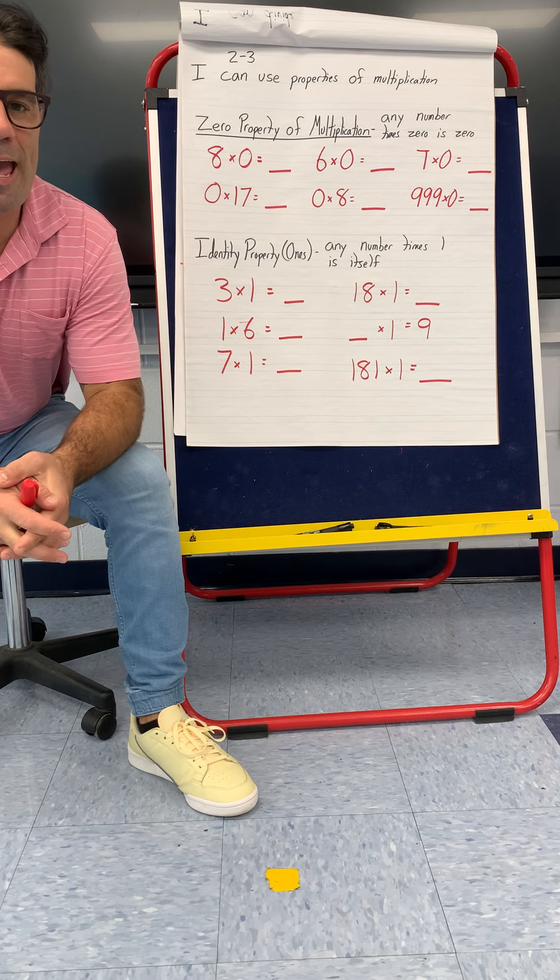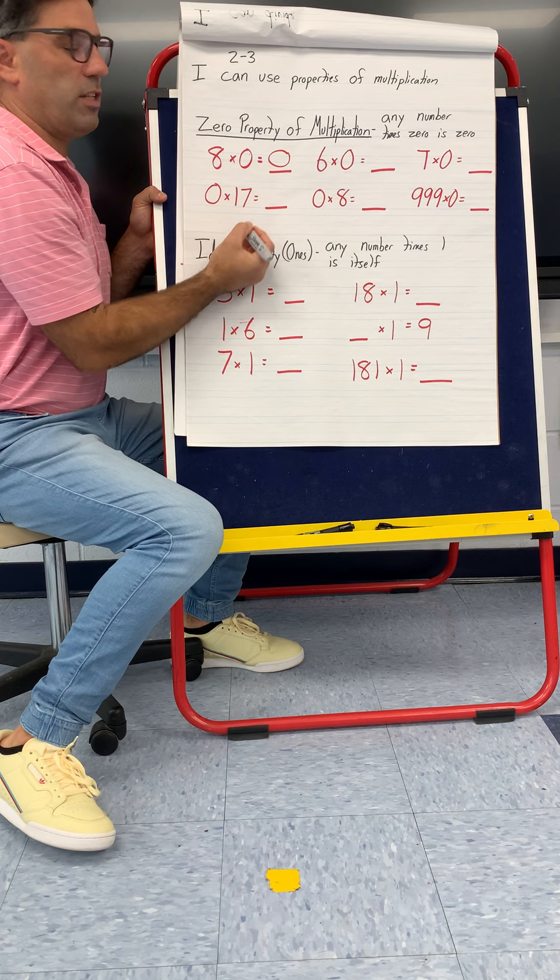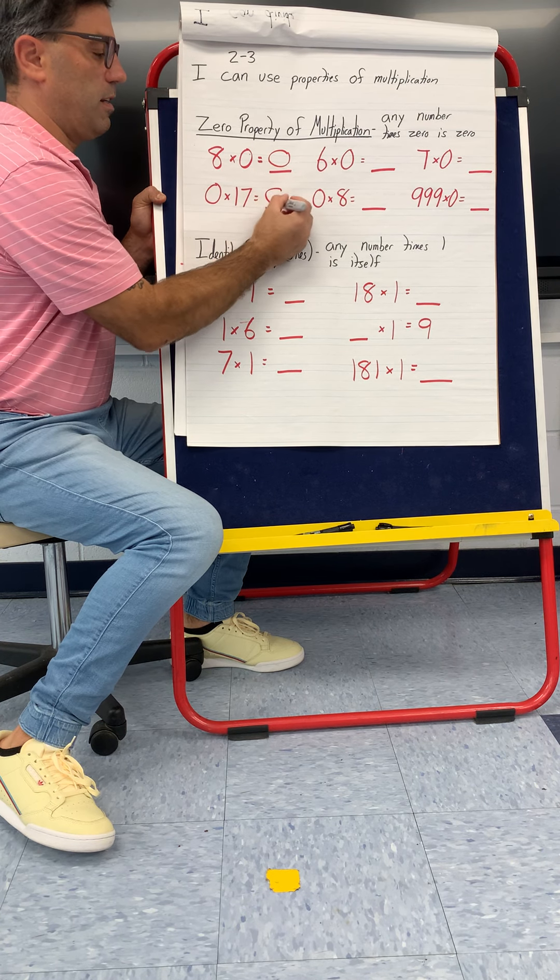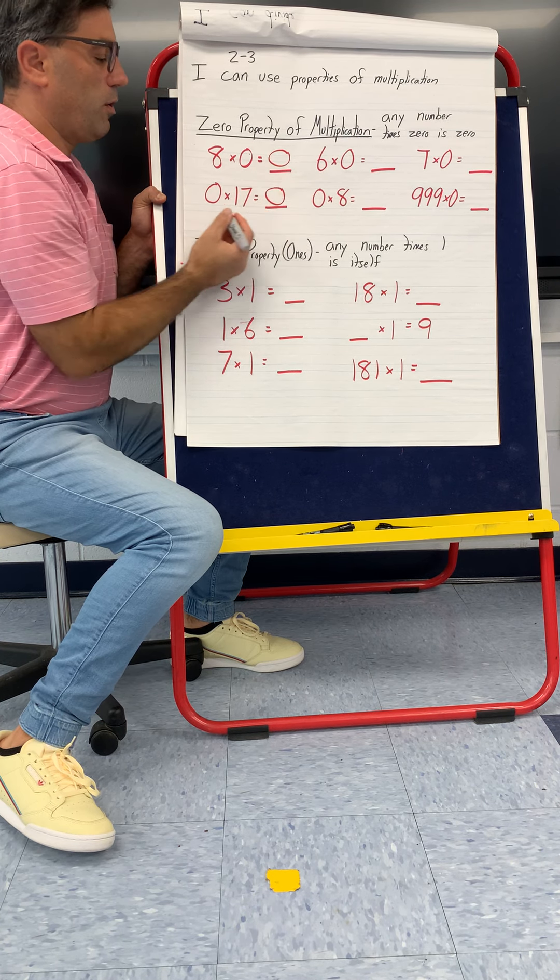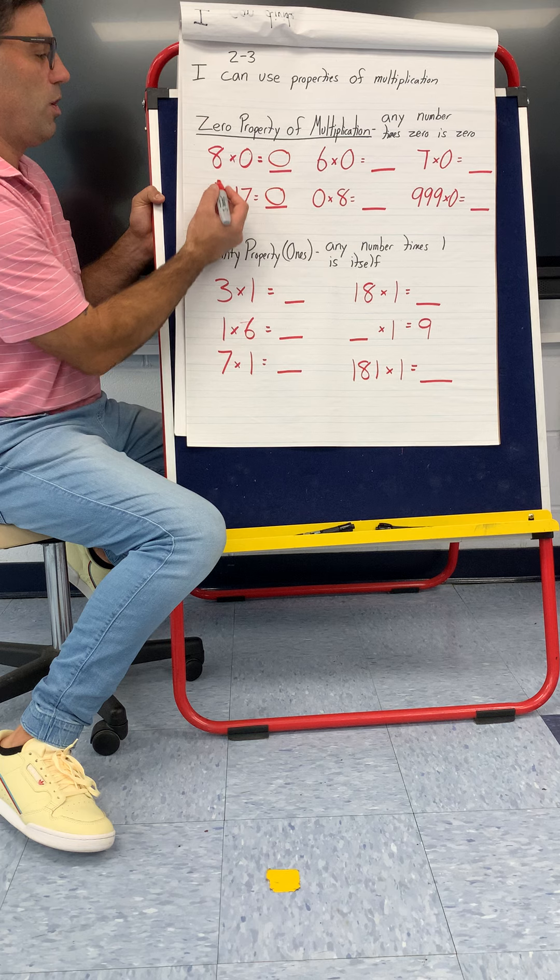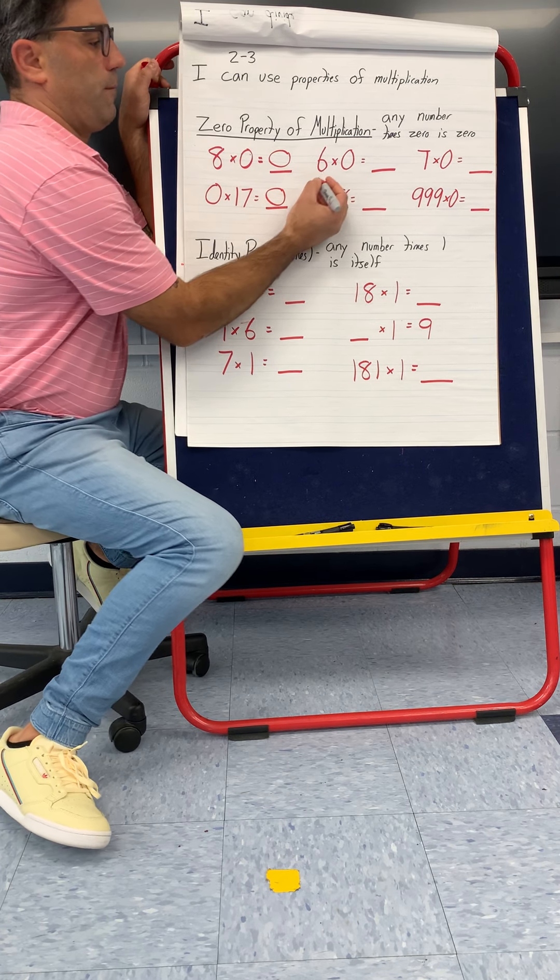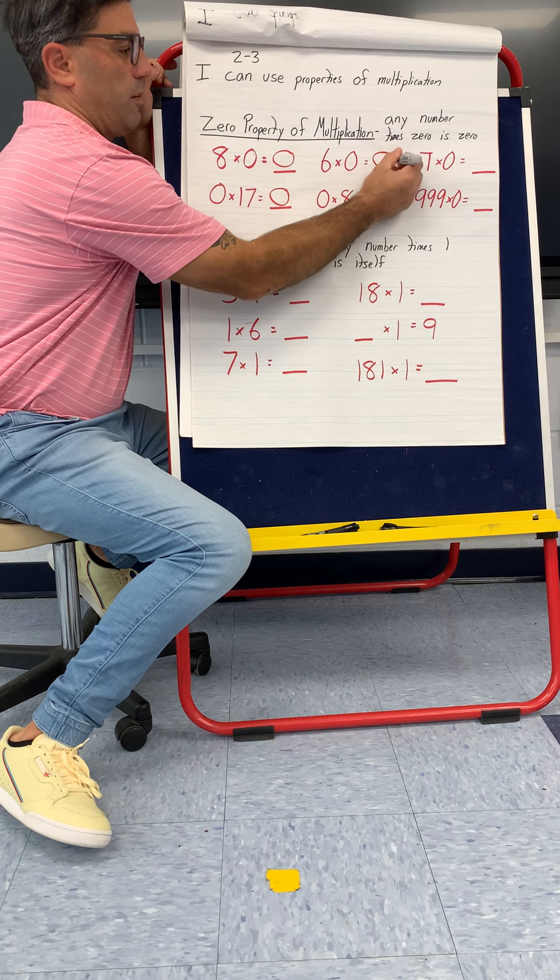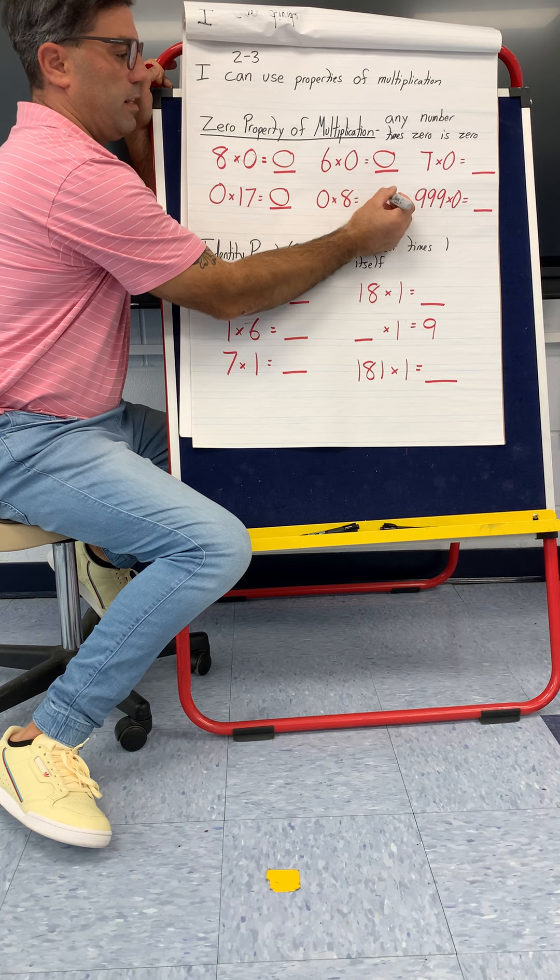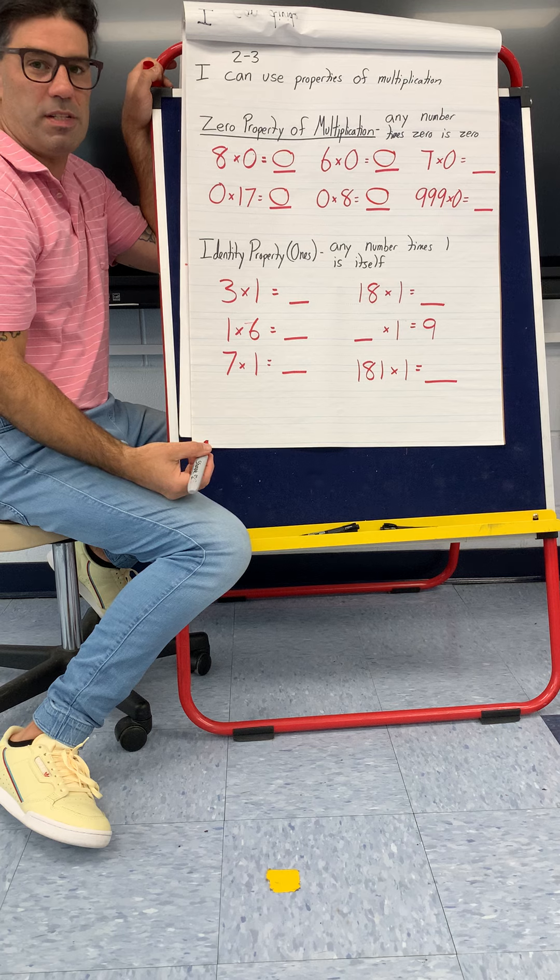Anything times zero is zero. Eight times zero is zero. Zero times seventeen is zero. So what it means is zero groups of seventeen, so you have none. Or eight groups of zero are none.